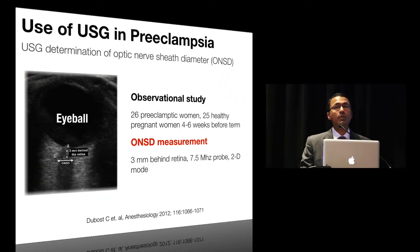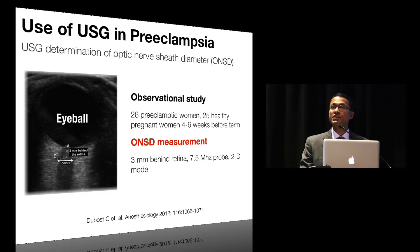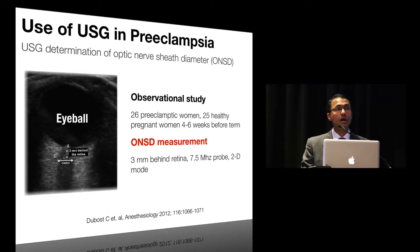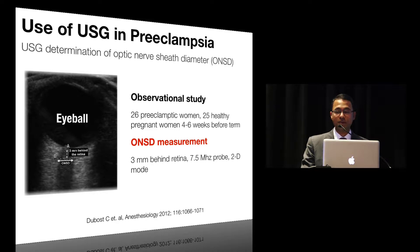We all know that ultrasound is widely used for neuroaxial techniques, and there's a special session chaired by Brendan Carvalho on Sunday. I'm going to focus on two studies which extend the utility of this tool. The first study I'm going to highlight is the use of ultrasound to monitor disease progress in preeclampsia. The underlying premise is that raised intracranial pressure is associated with optic nerve sheath edema, and therefore estimating the optic nerve sheath diameter would function as a surrogate marker for raised ICP.